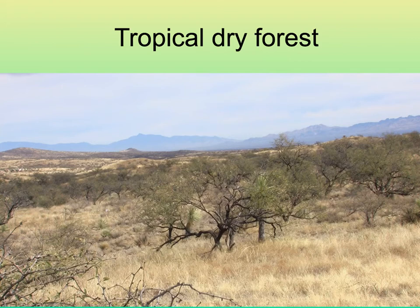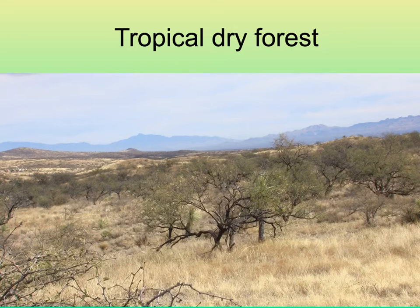The tropical dry forest has an intermediate amount of rainfall, but it's highly seasonal. During the wet season the landscape is green and the trees are covered with leaves. In the dry season, many of the plants drop their leaves, and that's the time when they flower.